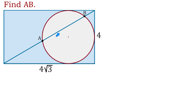Notice that AB represents a chord of this circle. To find the chord of a circle we need to know the radius of this circle and the perpendicular distance from the center to the chord. The radius of the circle is 2 because it is half of 4. But what about this distance?